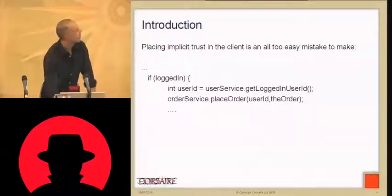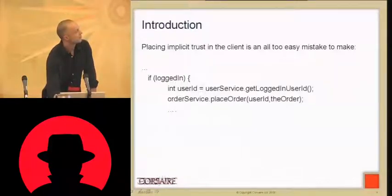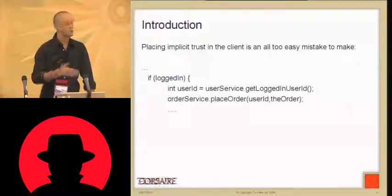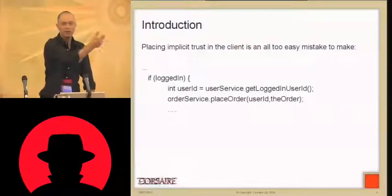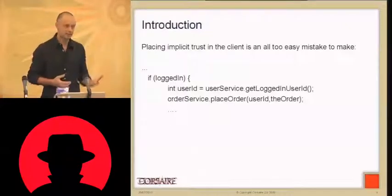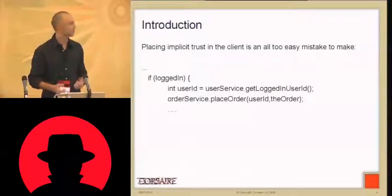For example, on the client side: if logged in, then user ID equals get the logged in user from a server, then place an order on the server using this user ID and an order. This is an example of state being stored on the client side — user ID and logged in are both local client-side variables. If you can get into the client and manipulate these variables, you can change the way the client-server application is meant to work. The code looks fine to a developer, but if you assume the client is untrusted — which it always is — you can potentially circumvent the logic.